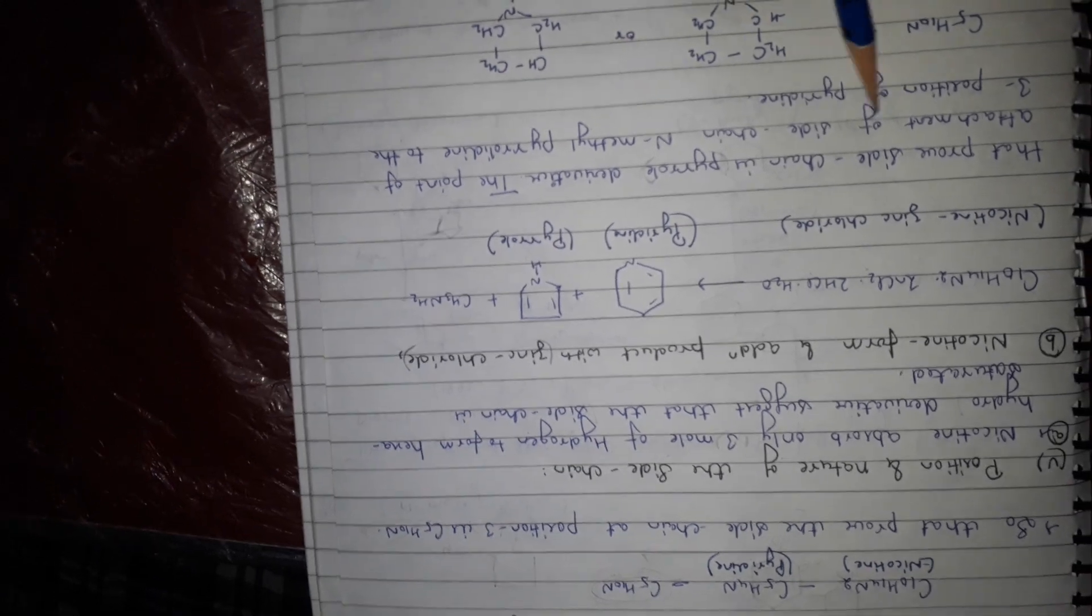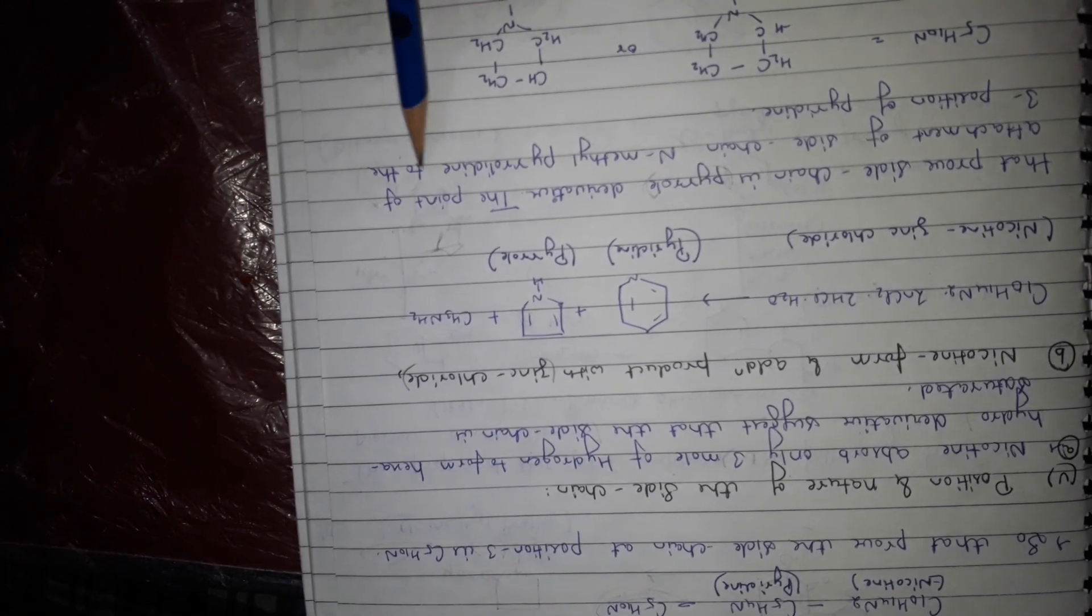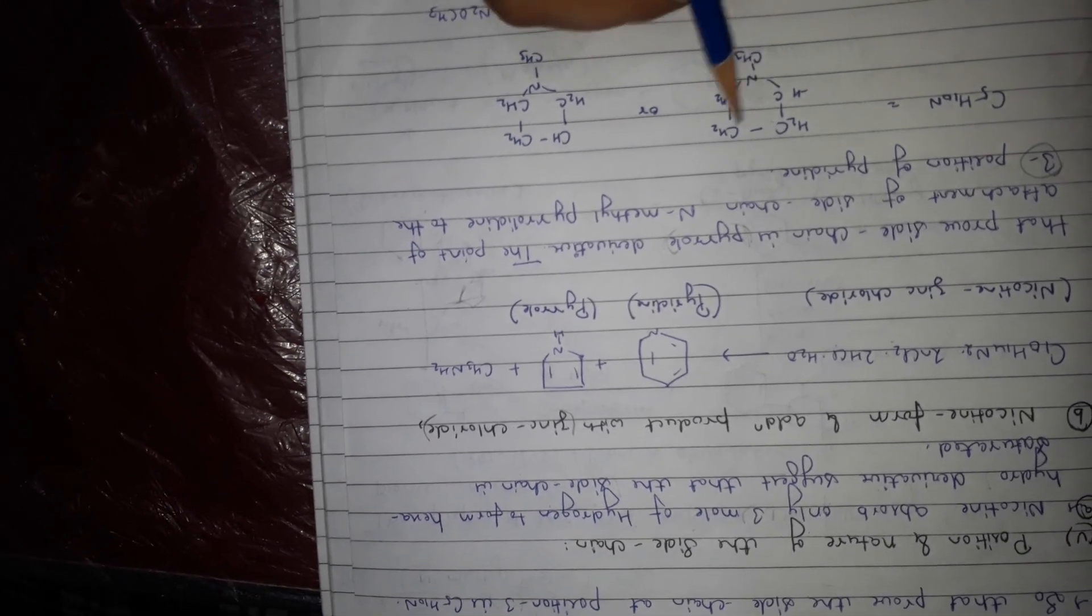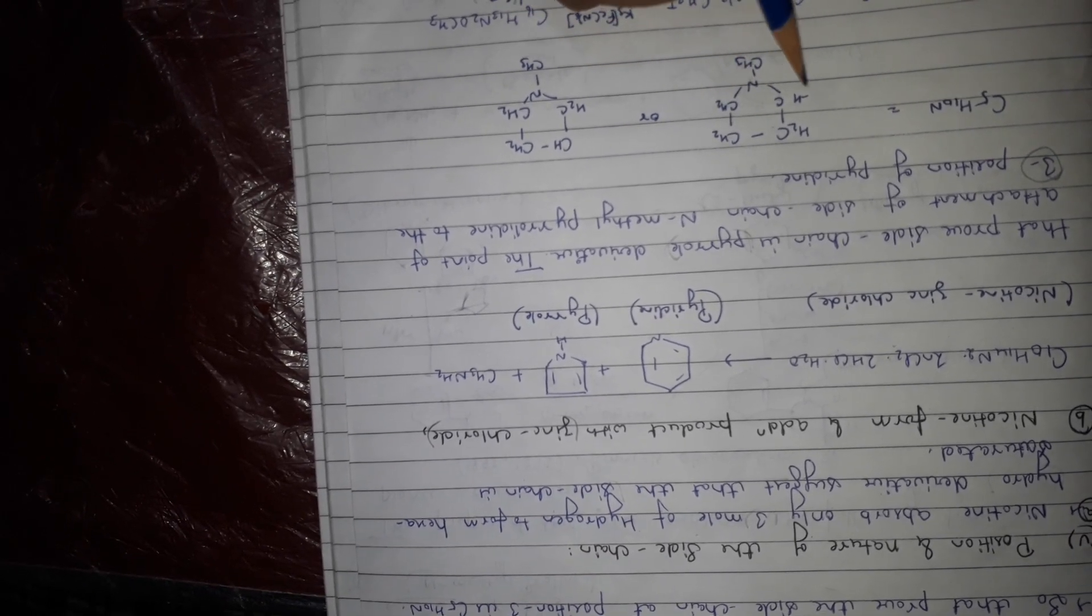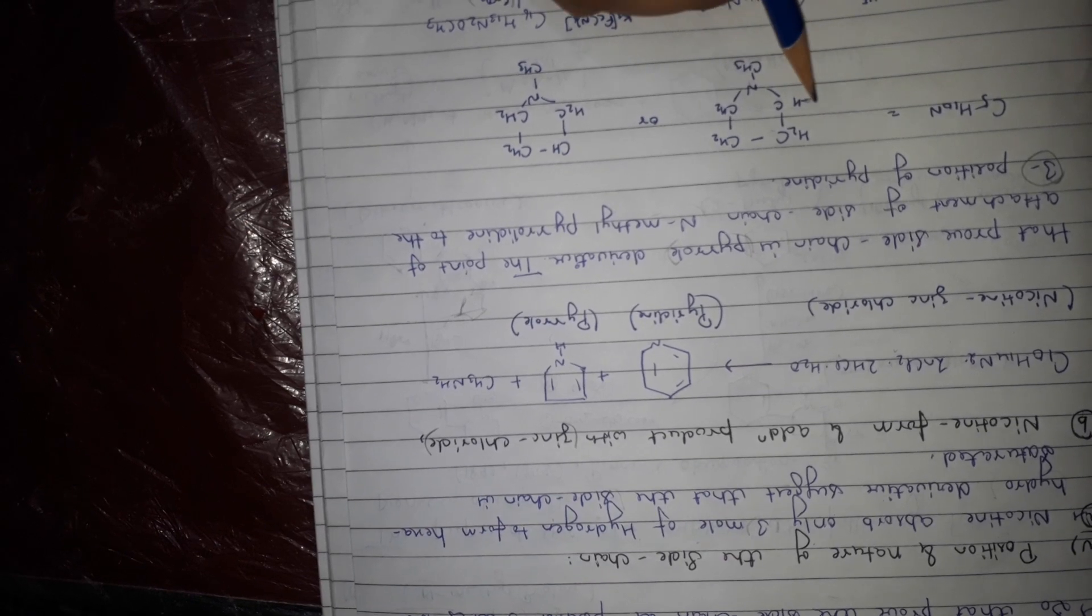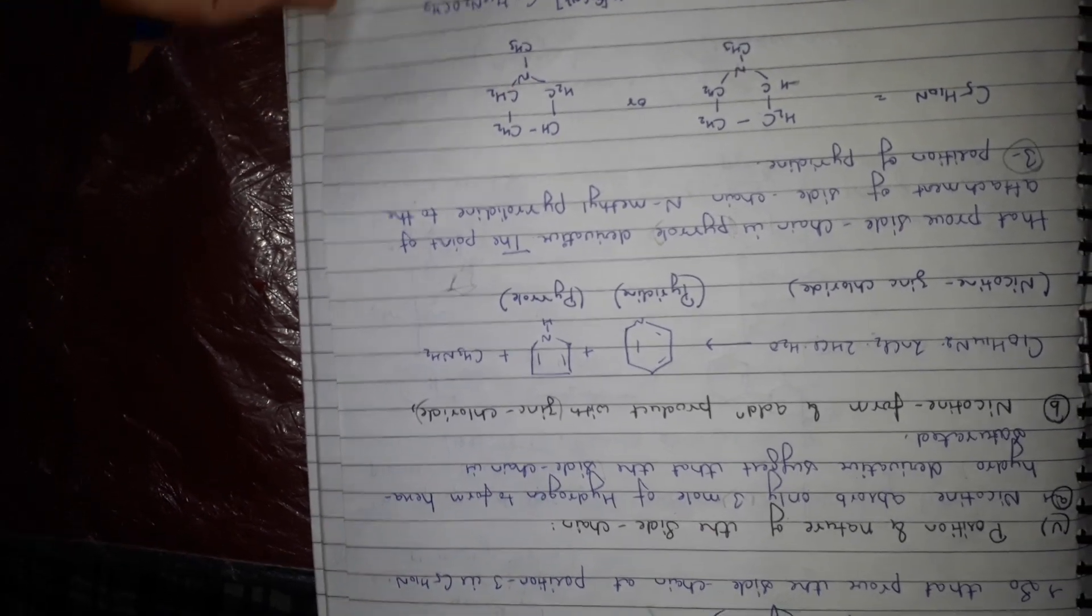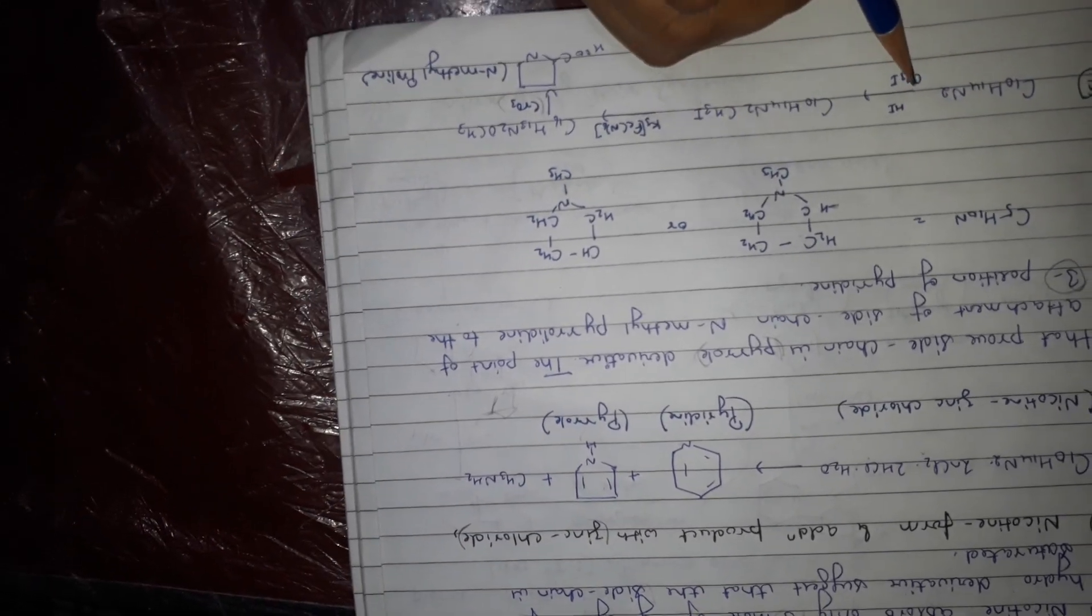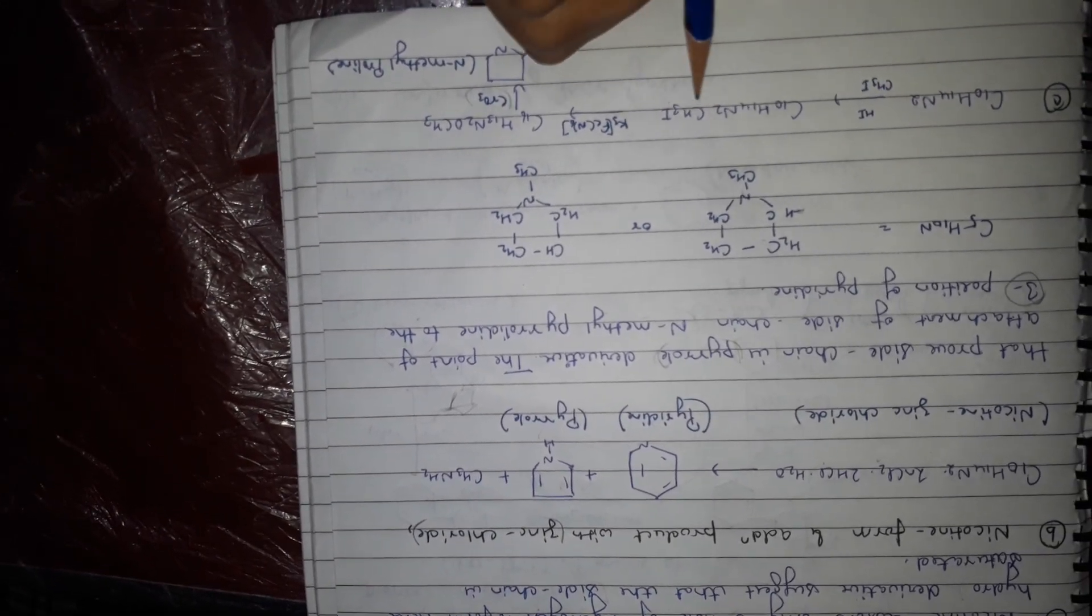The point of attachment of side chain N-methyl pyrrole into the third position. C5H10N becomes CH2-CH2 and N-CH3, and this is linkage of pyridine ring here. C10H14N2 on HI, CH3I, CH3I will be attached with N2.